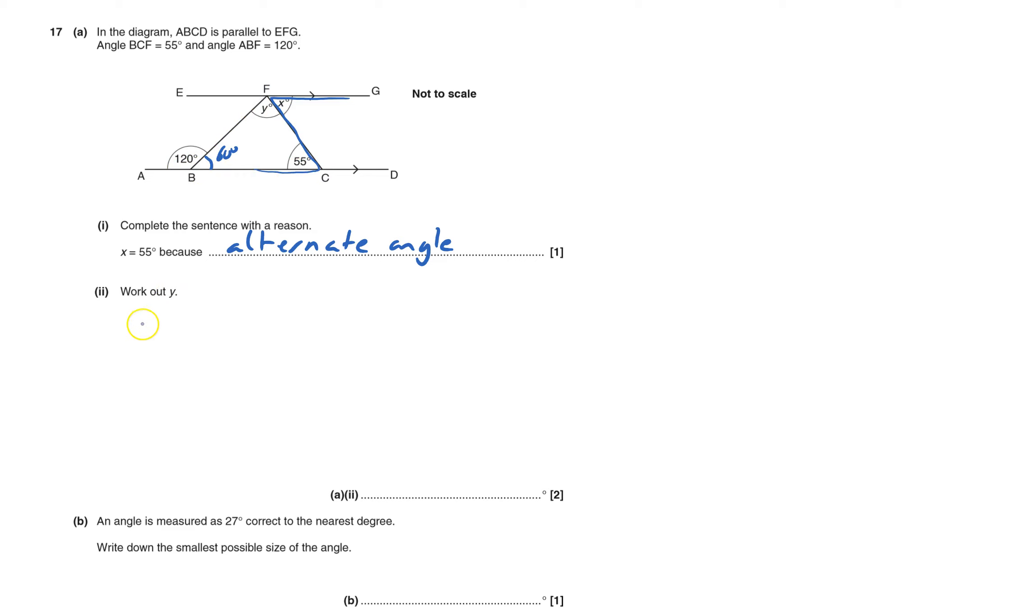Angles in a triangle add up to 180, so I'm going to do 60 plus 55, and that equals 115. And then Y will equal 180 take away that 115, and that equals 65 degrees. That's B. That's A rather.